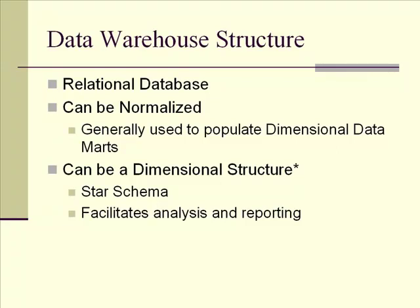The data warehouse structure is what we're looking at today, and we're going to contrast it with a typical relational database structure that is highly normalized. The data warehouse itself does sit in a relational database world, so it's very much like operational systems in that respect. And some data warehouses can be normalized structures. If this is the case, then generally the data warehouse is used to populate other data marts of a dimensional structure. So we're going to be discussing the dimensional structure, which is what we sometimes refer to as a star schema.